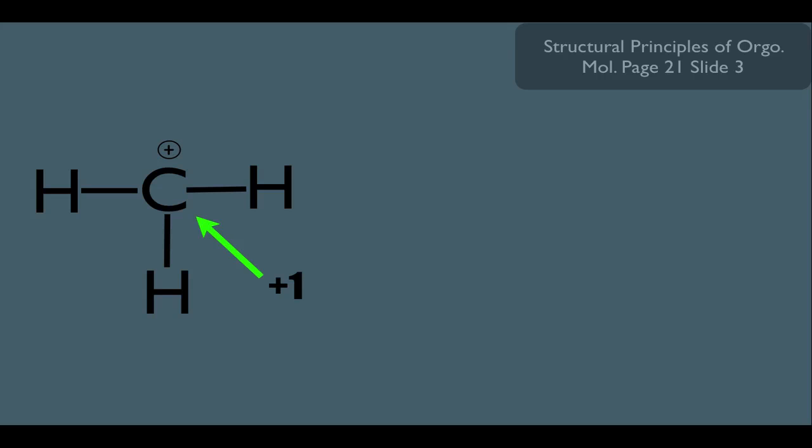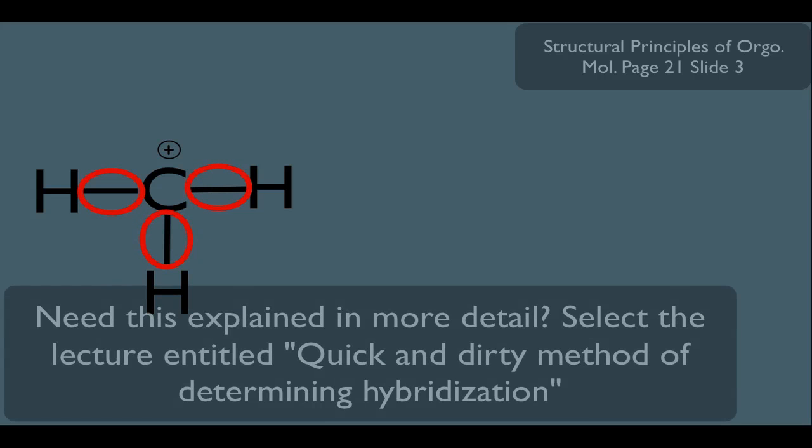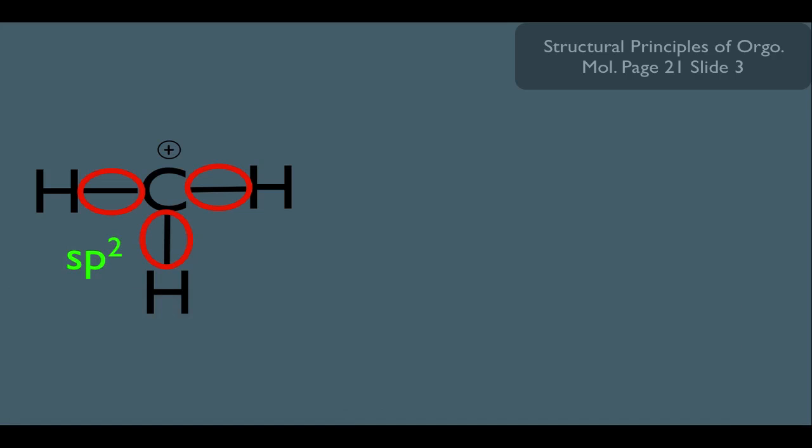The other structural detail I want you to know is notice this carbon has a steric number of three, and we saw in another online lecture that that means it must be sp2 hybridized, which means its bond angles have to be 120 degrees.